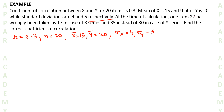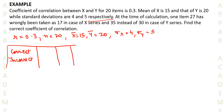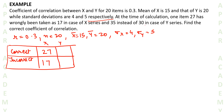At the time of calculation, one item — 27 — has wrongly been taken as 17. So we have a correct value and an incorrect value for x and y. Wrong was 17, correct is 27. And 35 instead of 30 — meaning 30 is the correct one and 35 is the wrong one. This is the correct and incorrect data that we have taken.